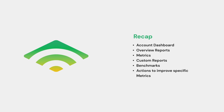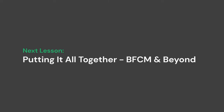In this lesson, we covered the multitude of ways Klaviyo provides you performance metrics on your account. You can have high-level snapshots on your account dashboard performance tab, as well as more tailored information in your analytics tab. You can also find overview reports within the respective sections for your sign-up forms, flows, and campaigns. Within your analytics section, you can dig deeper into generating custom reports or see how you're performing relative to your peer group within benchmarks. Lastly, we discussed clear, actionable ways to improve your account performance. In our next lesson, we'll be discussing how to put all that we've learned together to prepare for a successful Black Friday and beyond.